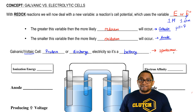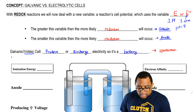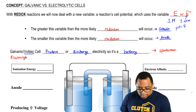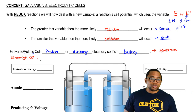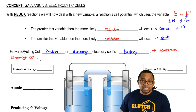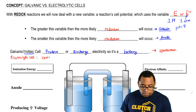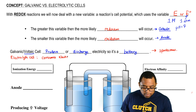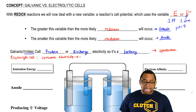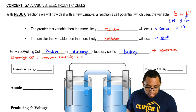The opposite of a galvanic or voltaic cell is called an electrolytic cell. An electrolytic cell does not produce or discharge electricity — instead it uses electricity to happen. It consumes electricity. An electrolytic cell is non-spontaneous and requires an outside energy source in order for it to occur.